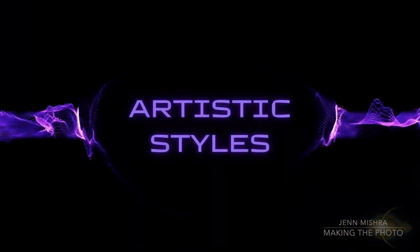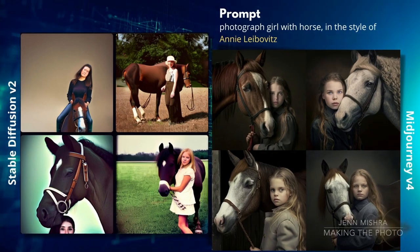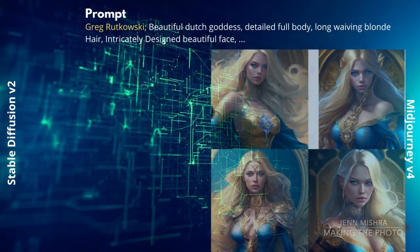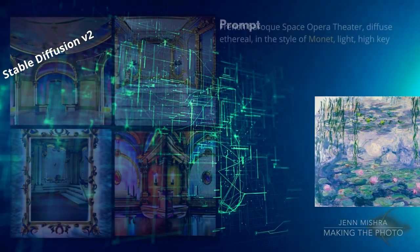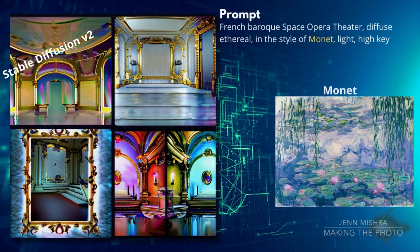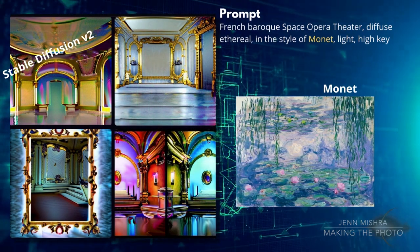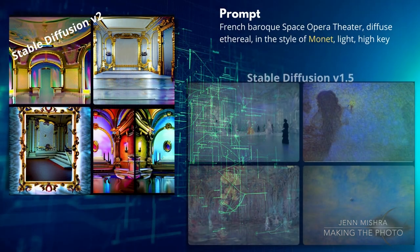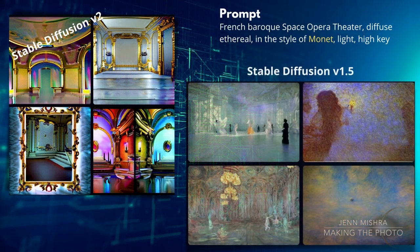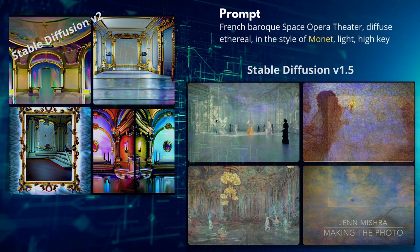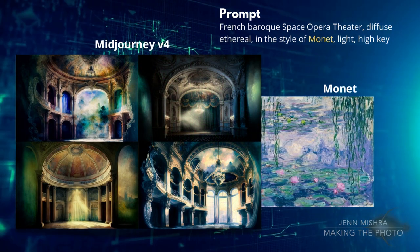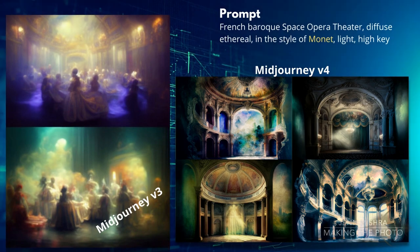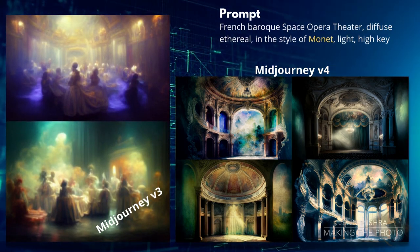A shorthand way of telling the AI what you want your image to look like is to use the name of an artist. Some artists complain that their styles are being used this way. To appease these artists, Stable Diffusion seems to have removed artistic styles from version 2. Even classic artists like Monet, who features in every style transfer tool around, is missing from Stable Diffusion version 2. Version 1.5 picks up on Monet no problem, but version 2 does not. Mid Journey seems to know more artistic styles and lets you use them. There is a difference between Mid Journey version 3 and 4 — version 3 is more impressionistic, while version 4 is still impressionistic, though less classically Monet.